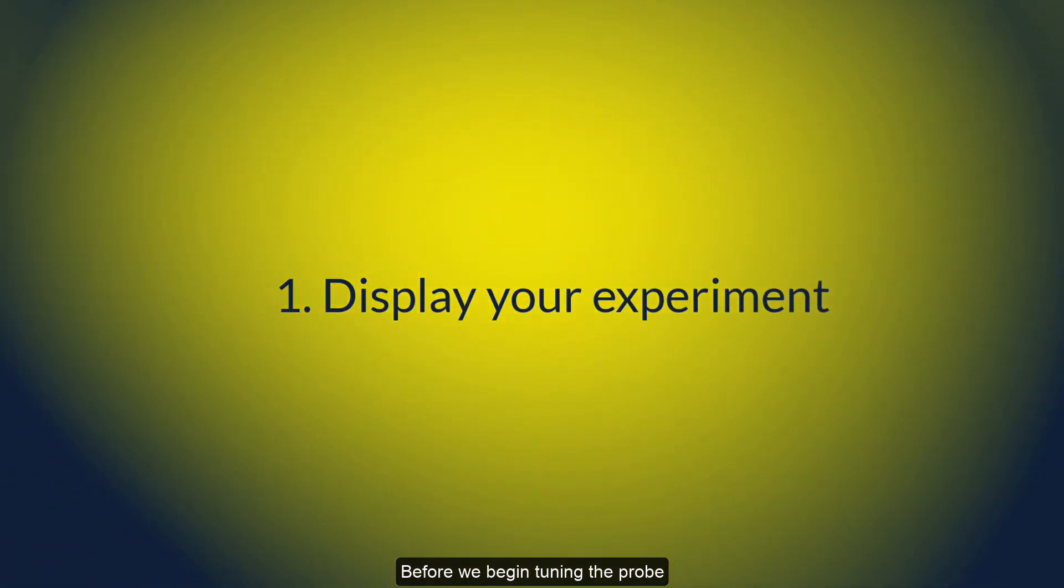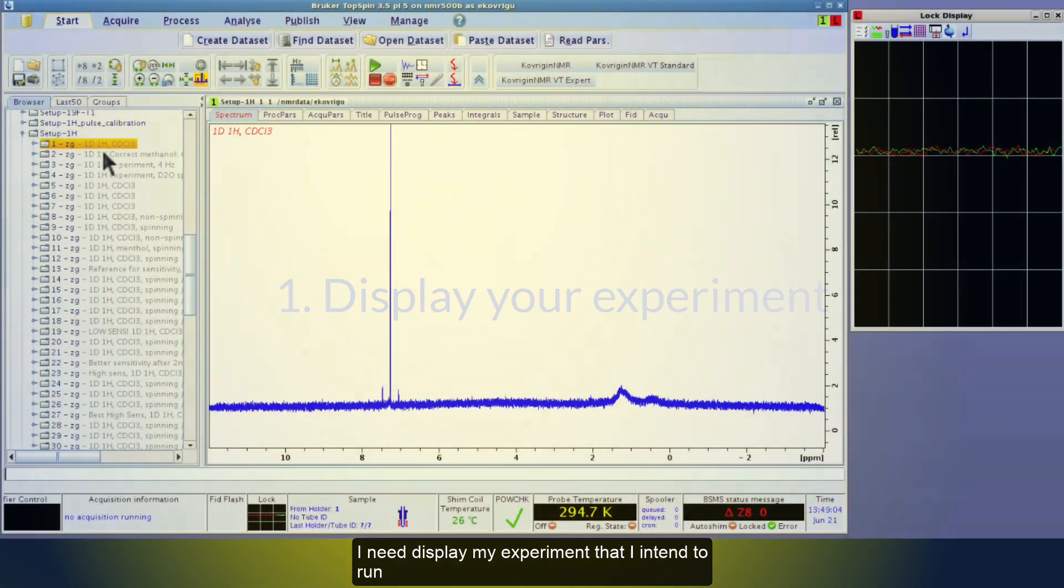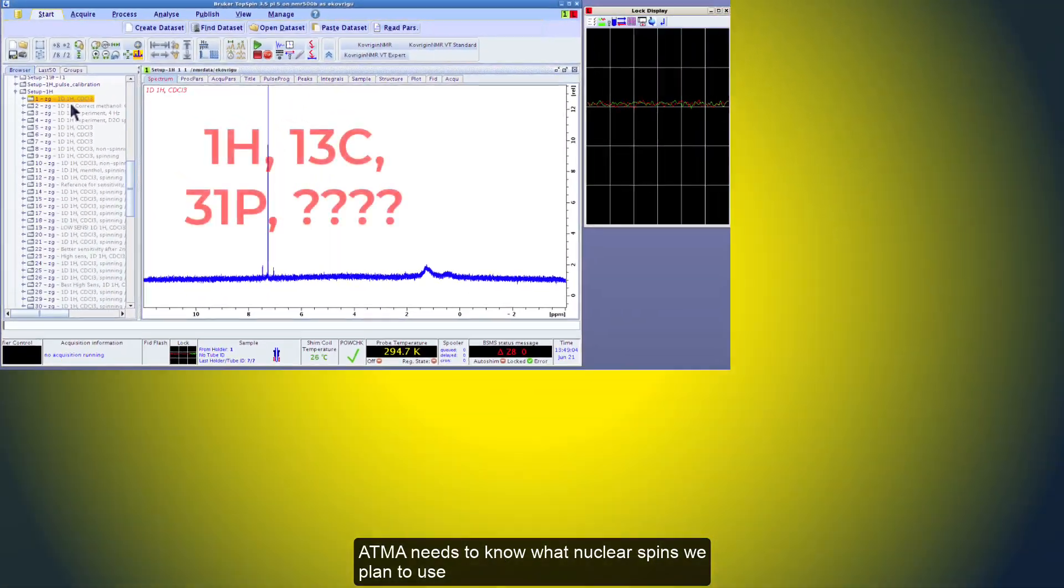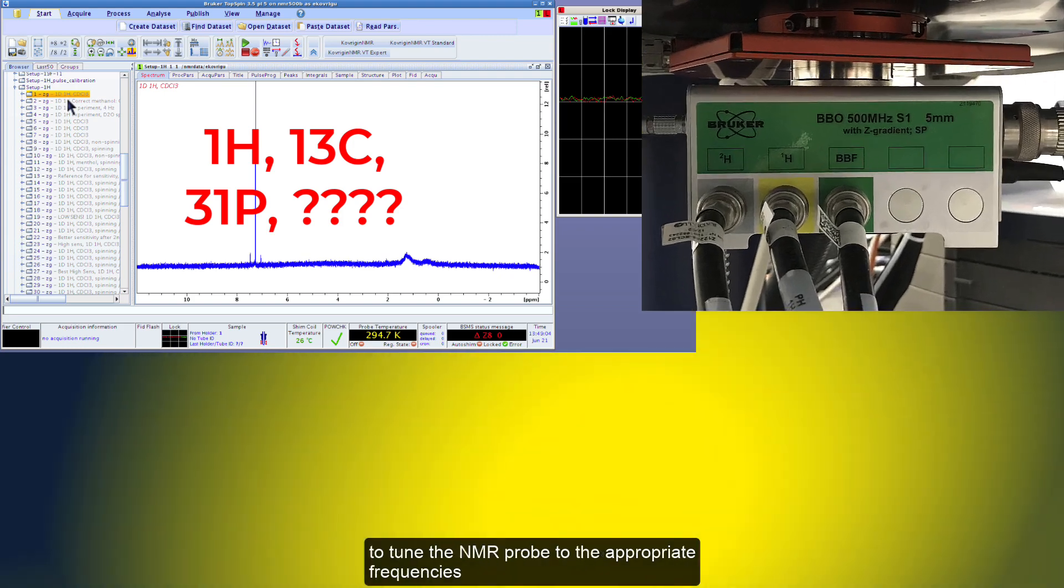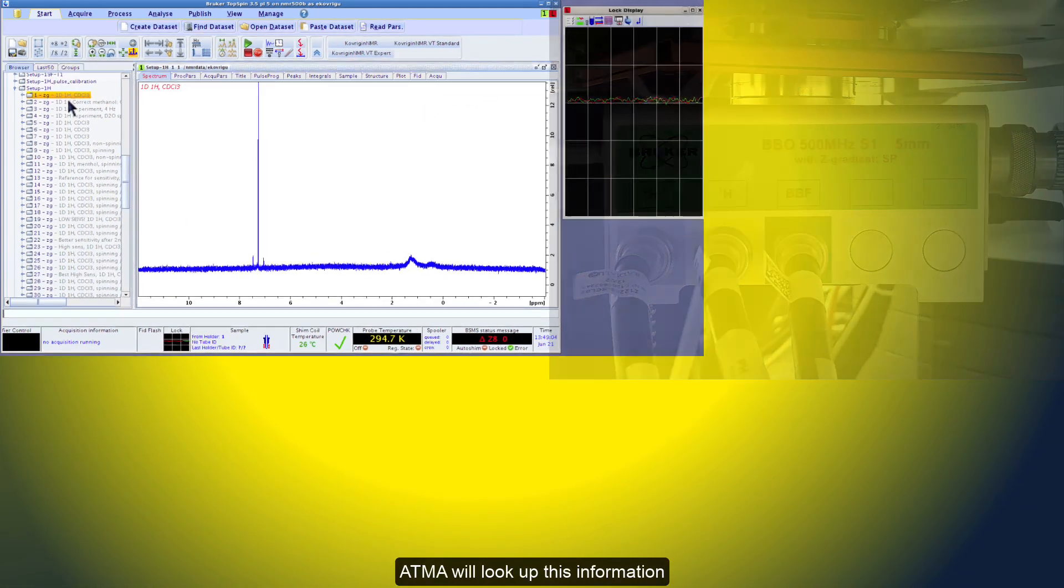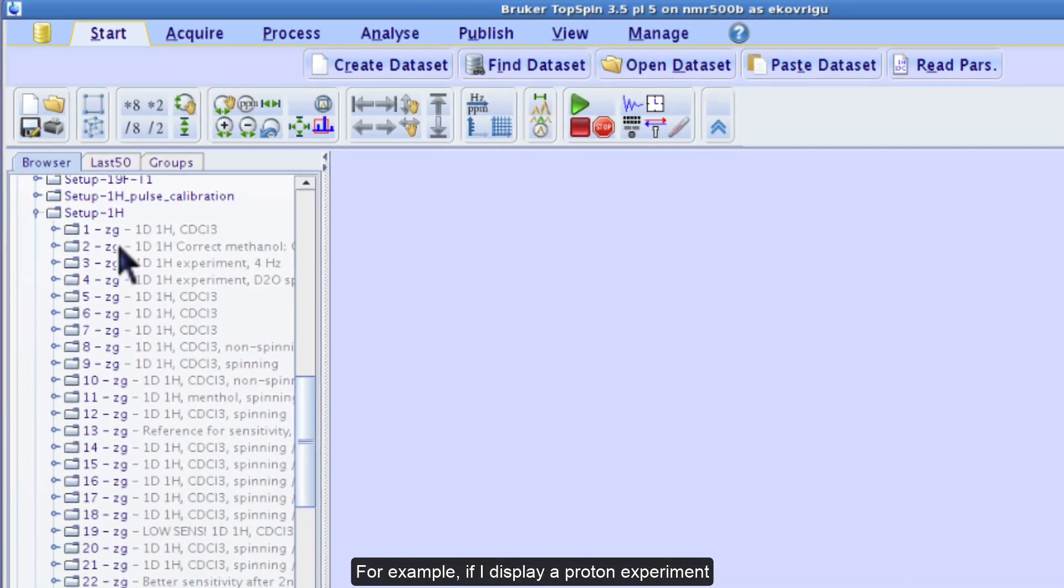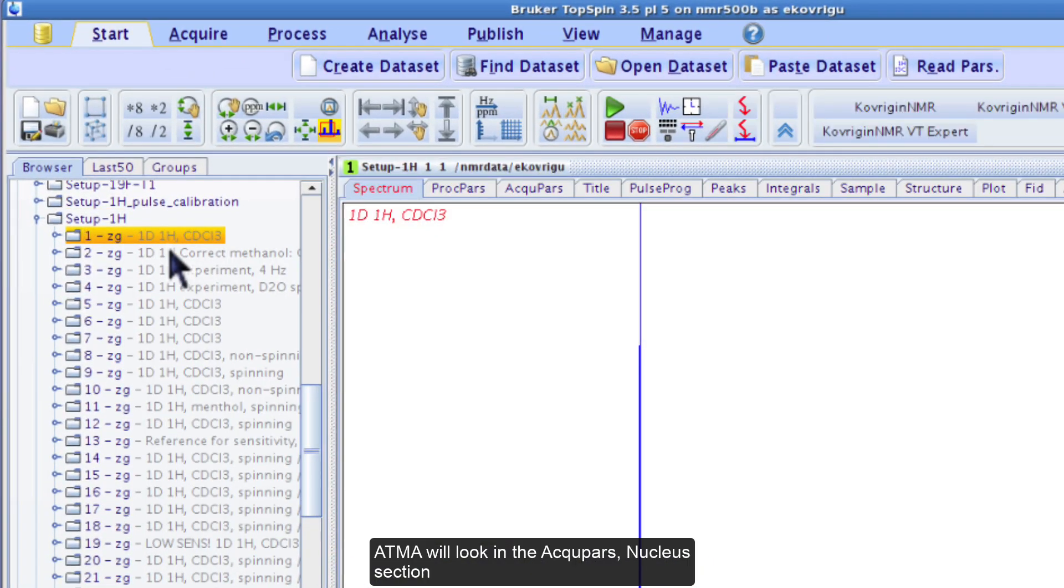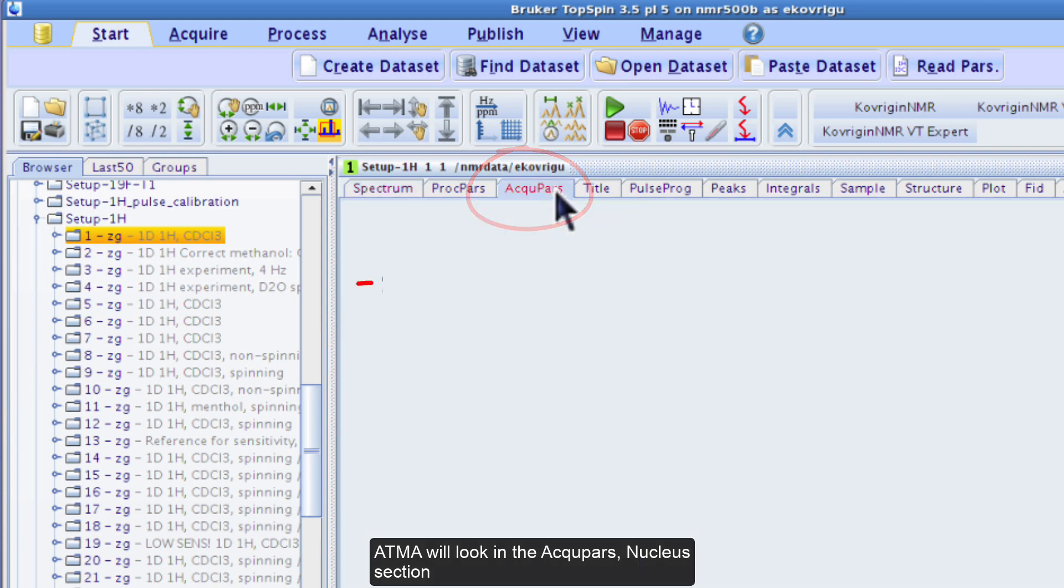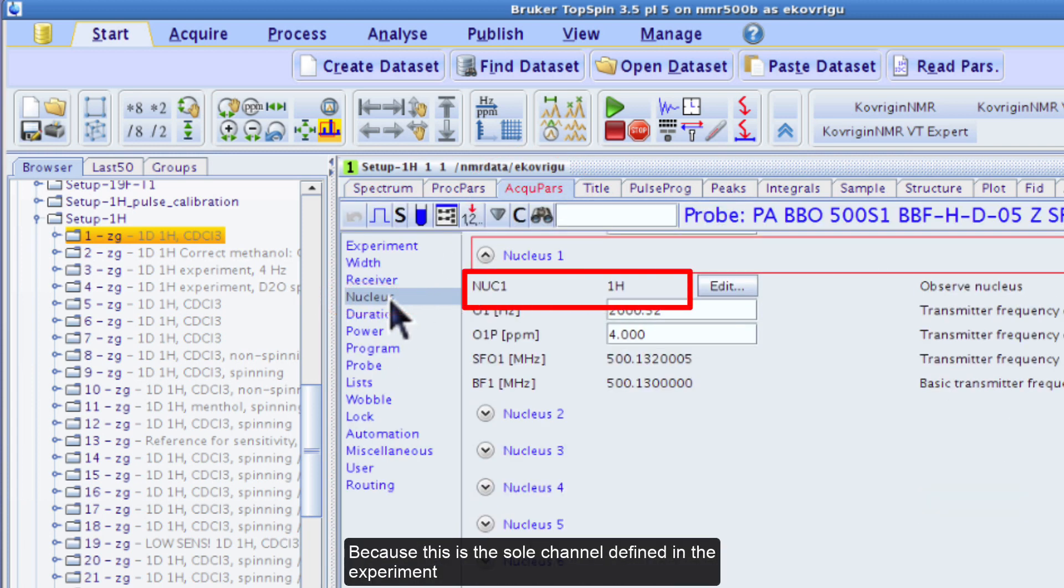Before we begin tuning the probe, I need to display my experiment that I intend to run. ATMA needs to know what nuclear spins we plan to use to tune the NMR probe to the appropriate frequencies. ATMA will look up this information in the experiment that is currently displayed. For example, if I display a proton and carbon channel, I will only tune the proton channel, because this is the sole channel defined in the experiment.